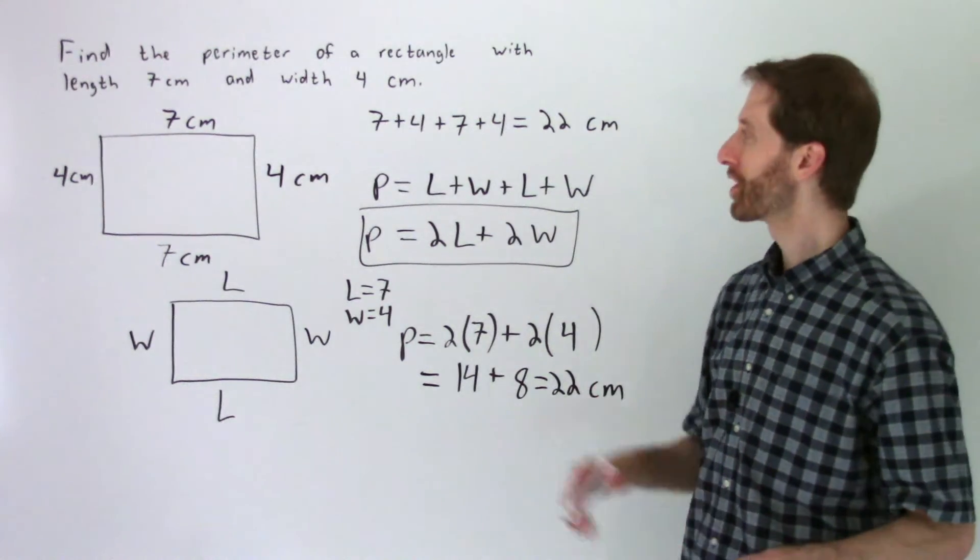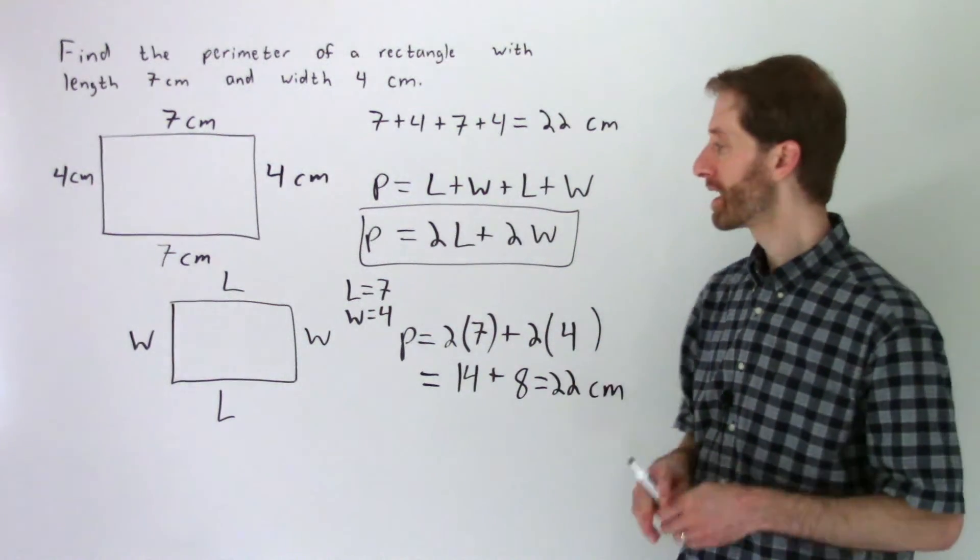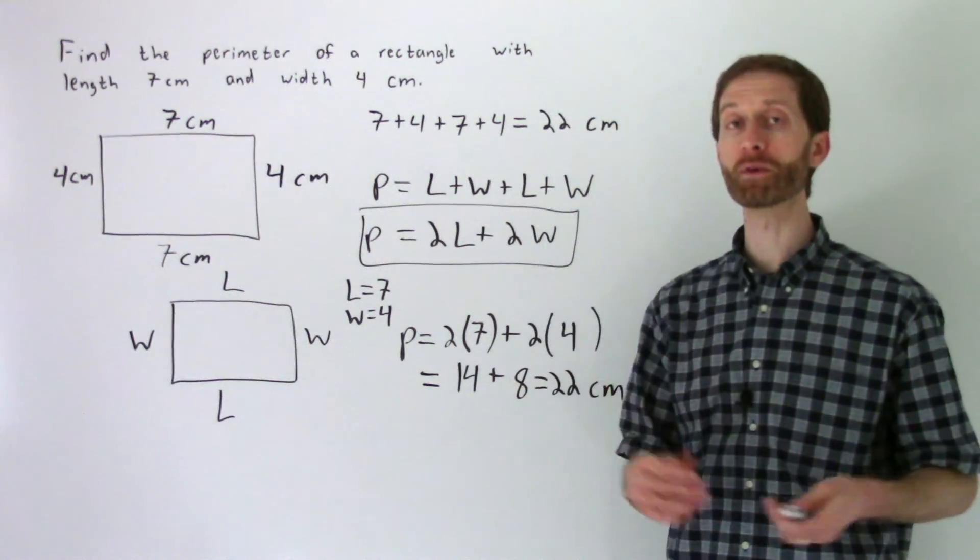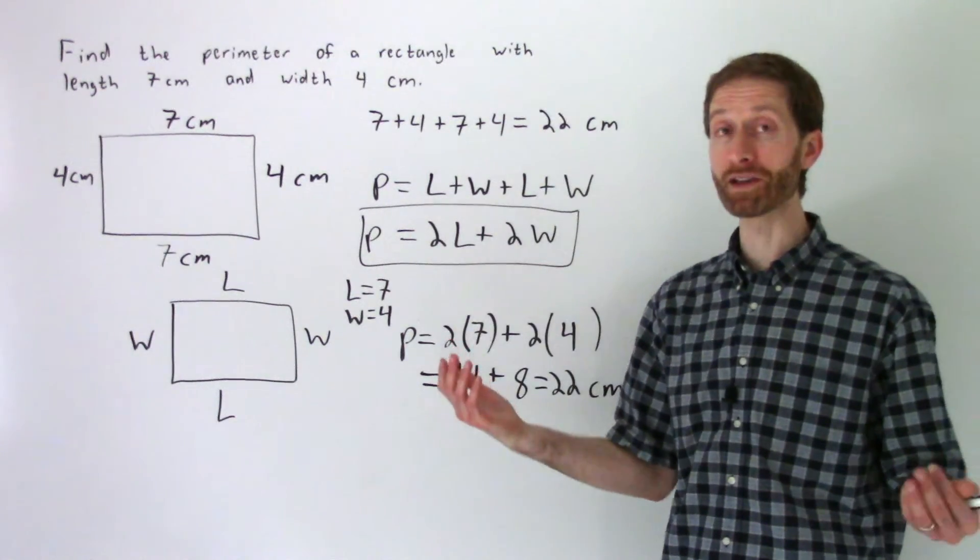There you have it, folks. A way to do perimeter just by the old school thought process of adding up all the sides, and then seeing where the formula for the perimeter of a rectangle comes from. Some teachers might teach it this way, others this way, others both ways. You're prepared for all of it, and you know why it works.